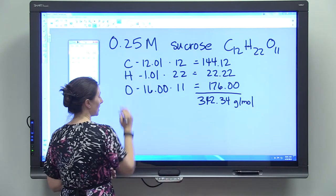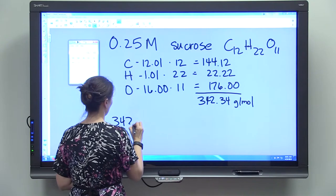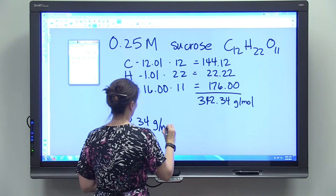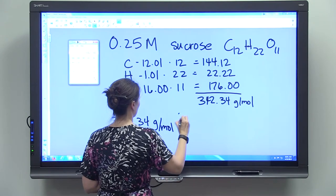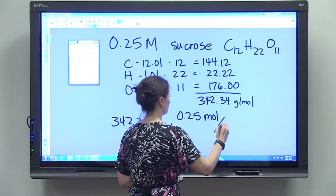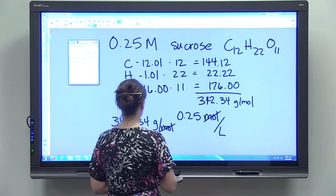We set up that same type of equation where we see 342.34 grams per mole. And we know we want 0.25 moles per liter. The moles cancel out.